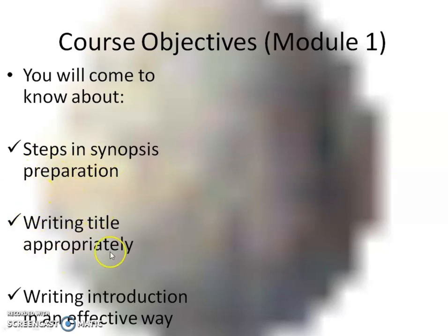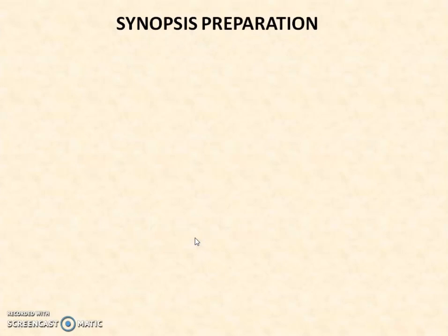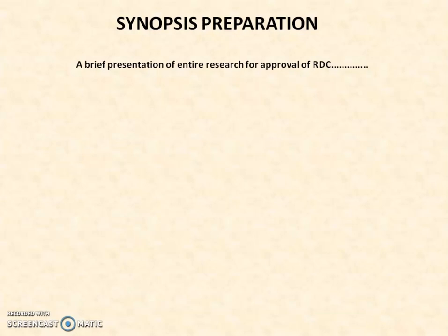You will also come to know about writing a title appropriately and writing an introduction in an effective way. Before we discuss the steps in synopsis preparation, let's discuss what a synopsis is. A synopsis is a brief presentation of an entire research for approval of the RDC, that is the Research Degree Committee. Before doing your research, you present a proposal before the committee which approves or disapproves what you are going to do. That proposal must be clear and precise so that it brings some outcome after you complete your research.